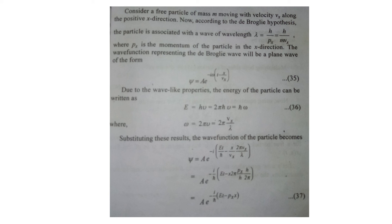Here we consider a free particle of mass m moving with velocity vx along the x-axis. We know that the particle possesses a de Broglie matter wave of wavelength lambda equal to h divided by momentum, that is h divided by px. So we can also write it as h divided by mv, where px is the momentum along the x direction.